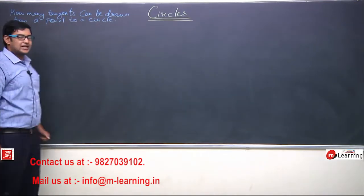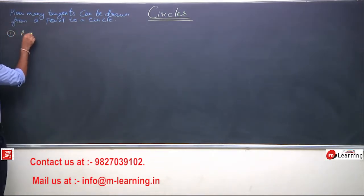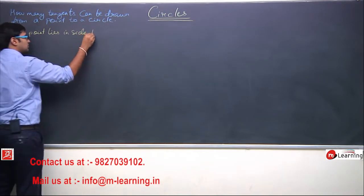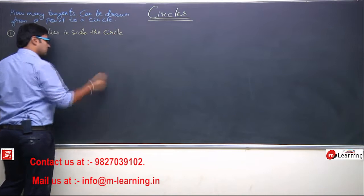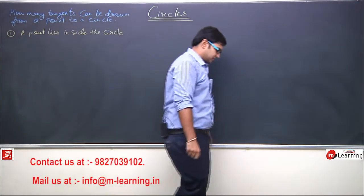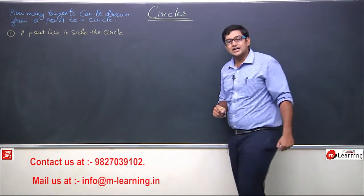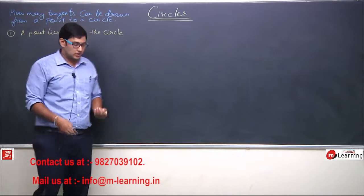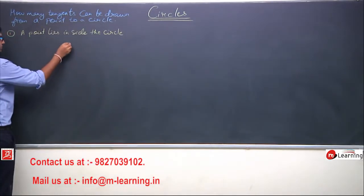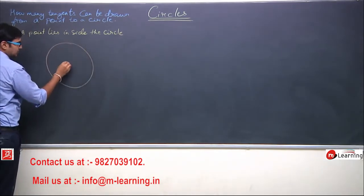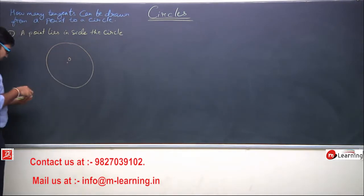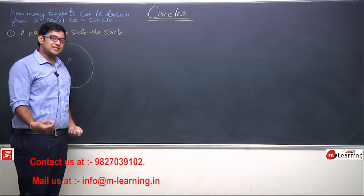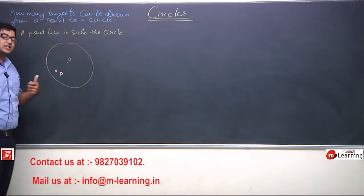Case one: a point lies inside the circle. Agar ek point circle ke andar lie kar raha hai, toh us point se kitne tangents aur kitne secants draw kar sakta hoon? Let us say we have a circle with center O, aur hum maan letay hain ki ek point P hai jo is circle ke andar lie kar raha hai. Ab mein yeh jaanna chahta hoon ki is P point se mein kitne tangents draw kar sakta hoon.